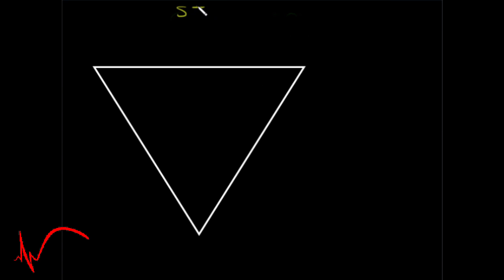So the standard limb leads display a graph of the potential difference recorded between two limbs at one time. This means that they use two leads to view the heart and are bipolar. So in these leads, one limb carries a positive electrode and another one carries a negative electrode.